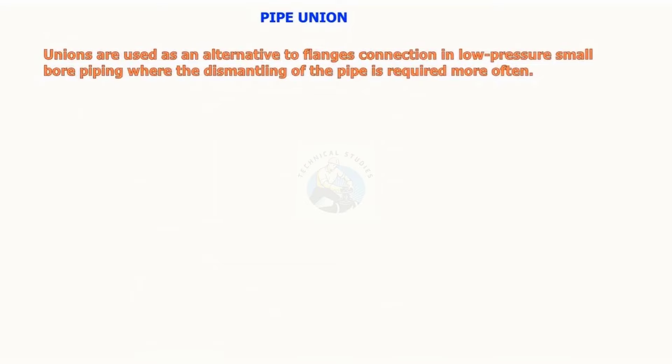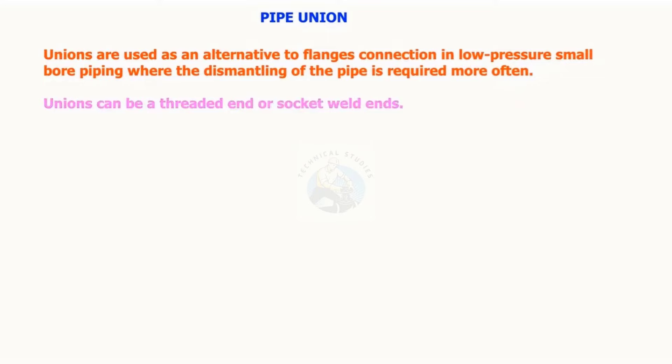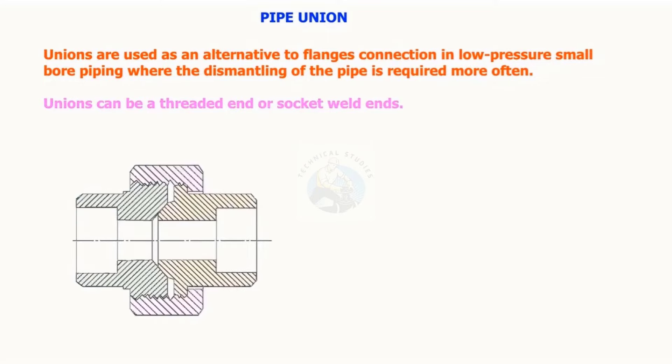Pipe unions are used as an alternative to flange connections in low pressure small bore piping where the dismantling of the pipe is required more often. Pipe unions can be a threaded end or socket weld end.